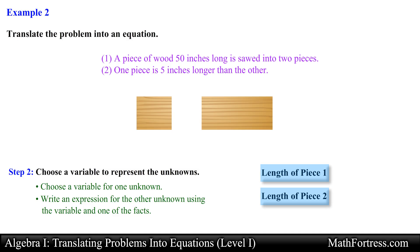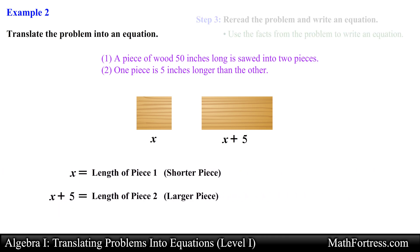Next we need to assign variables to our unknowns. Before we do this we need to first assign a variable to the unknown that contains the least amount of information. From sentence 2 we are told that one piece is 5 inches longer than the other piece. This means that we have one piece that is larger than the other piece. We have a small and a large piece. Looking at the facts from both sentences we have no information or relation about the smaller piece so we will assign the variable x to the shorter length. Having assigned a variable to the shortest length we can use sentence 2 to denote the largest length as x plus 5. Now that we have algebraic expressions for both unknown quantities we are ready to translate this word problem into an equation.